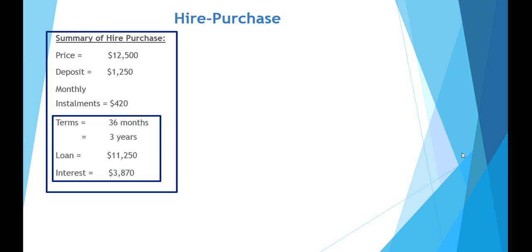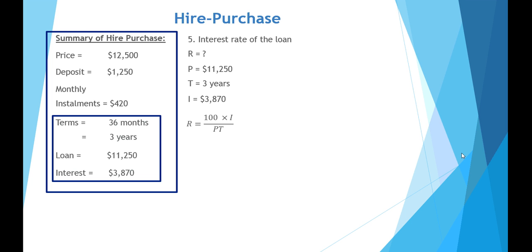Finally, let's see if we can work out the interest rate over those three years. We're after the rate in percent per annum. The principal — and it's important to notice that the principal is the loan amount, not the total price of $12,500 because we've already paid a deposit — is the amount we're loaning: $11,250. The term is three years; it was 36 months but we keep it in years because the rate is per annum. The interest charge was $3,870. Remembering this model is a flat rate or simple interest model, we substitute in our values and find a flat rate interest rate of 11.47% per annum.